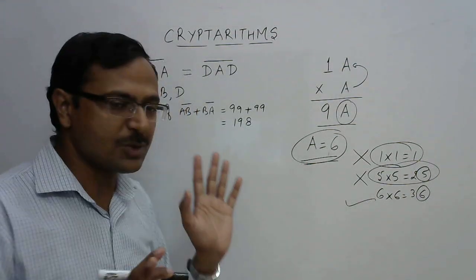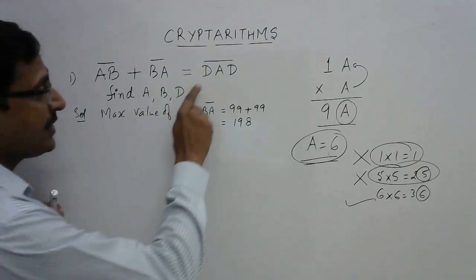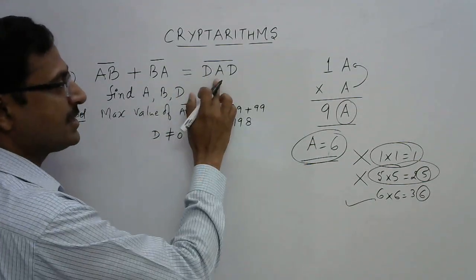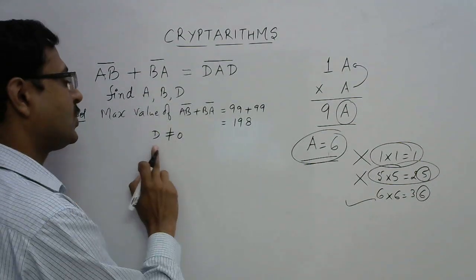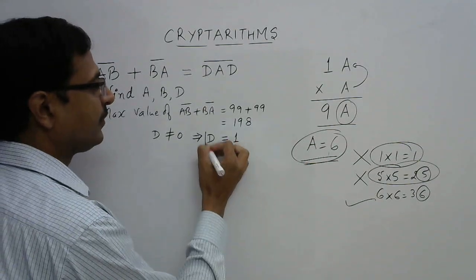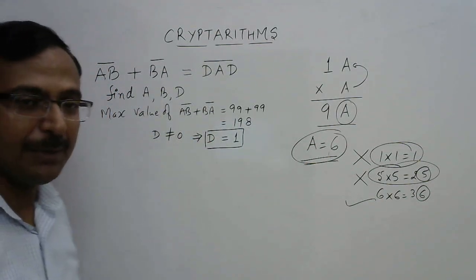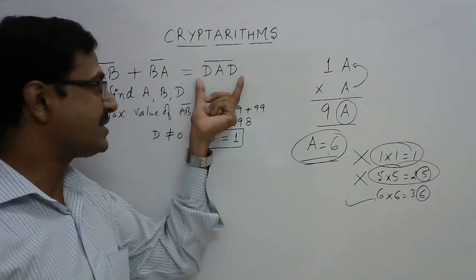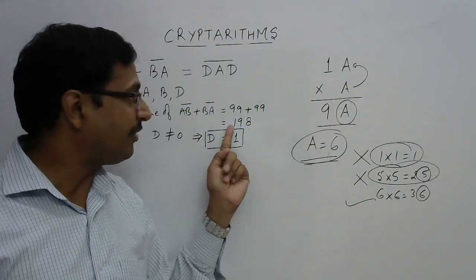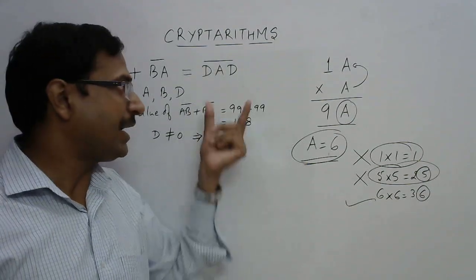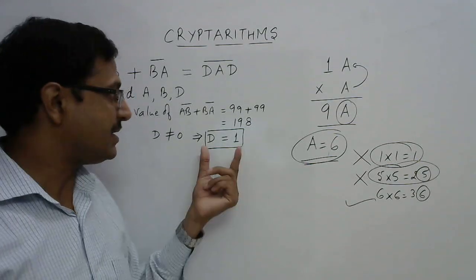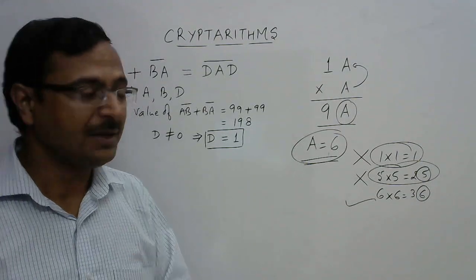Since the first and third digits of DAD are the same, 198 is automatically rejected because 1≠8. More importantly, d cannot be zero because DAD is a three-digit number. Since the maximum value is 198, all valid three-digit sums have 1 in the hundreds place. Therefore d must equal 1.